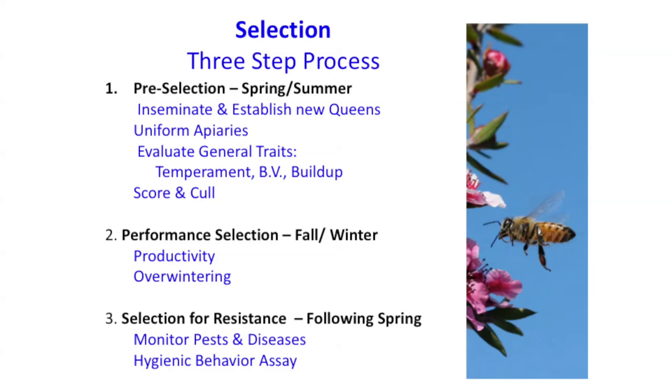Once you do the general selection you fine-tune it — you do a cut there, eliminate most of the colonies. Then you take those you've selected for general productivity and do more specific testing, like hygienic testing, something that will give them a little more advantage toward dealing with varroa. That's kind of the overall program.